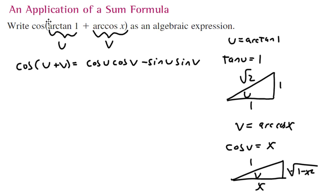If I'm going to find the cosine of arctan of 1 plus arccos of x, I'm going to replace arctan of 1 with u and arccos of x with v. So what's the cosine of u? I go to the u triangle, cosine is adjacent over hypotenuse, so this is 1 over radical 2. Cosine of v—I go to v, cosine is adjacent over hypotenuse, that's x.